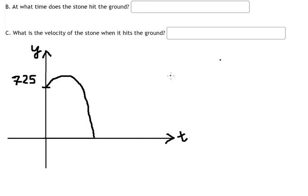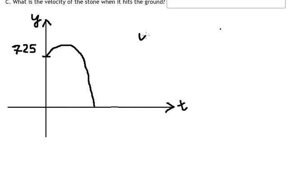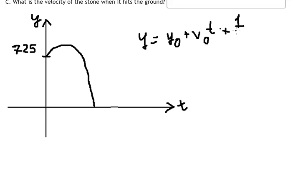The formula we use here is: y equals y-zero plus v-zero times t plus one-half times a times t squared. And the second formula is: v equals v-zero plus a times t.